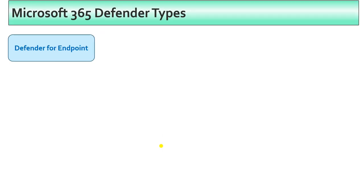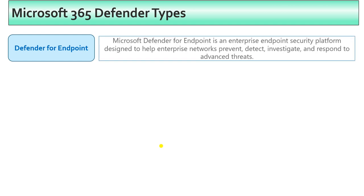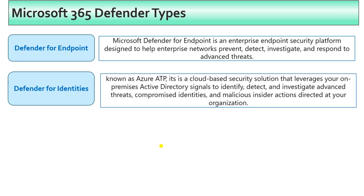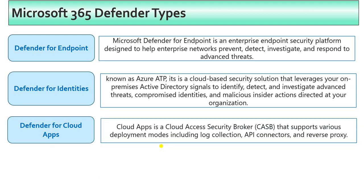The four types of Microsoft 365 Defender are: Defender for Endpoints — protects your endpoints; Defender for Identities — protects user identities hosted in on-premises AD or Azure AD; and Defender for Cloud Apps — a cloud access security broker that supports various deployment methods including log collection, API connectors, and reverse proxy.